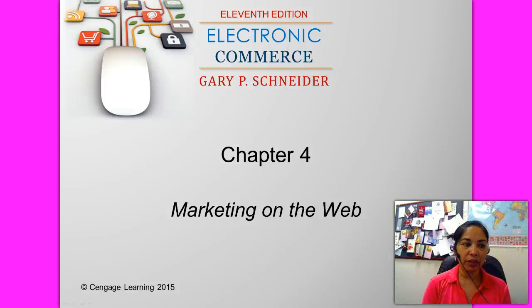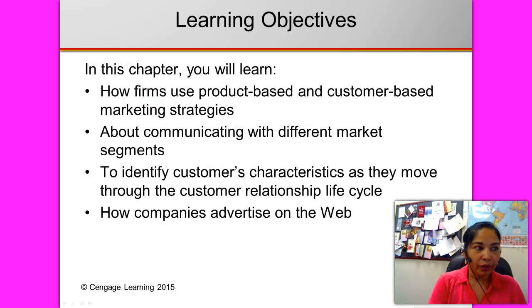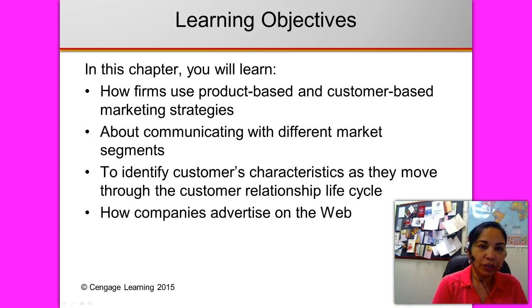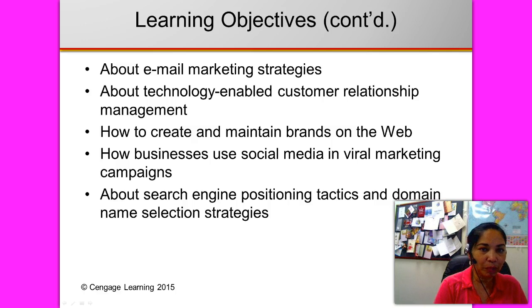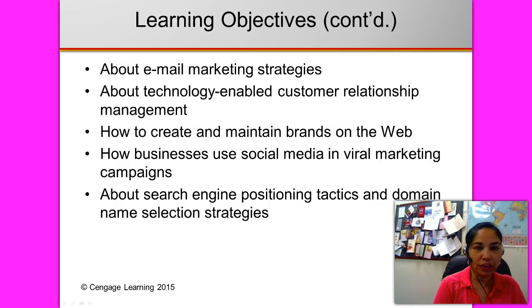Chapter 4 is Marketing on the Web. The learning objectives from this chapter are: how firms use product-based and customer-based marketing strategies, communication with different market segments, identification of customer characteristics as they move through the customer relationship life cycle, advertisement on the web, email marketing strategies, technology-enabled customer relationship management, creation and maintenance of brands on the web, businesses' use of social media in viral marketing campaigns, and search engine positioning tactics and domain name selection strategies.